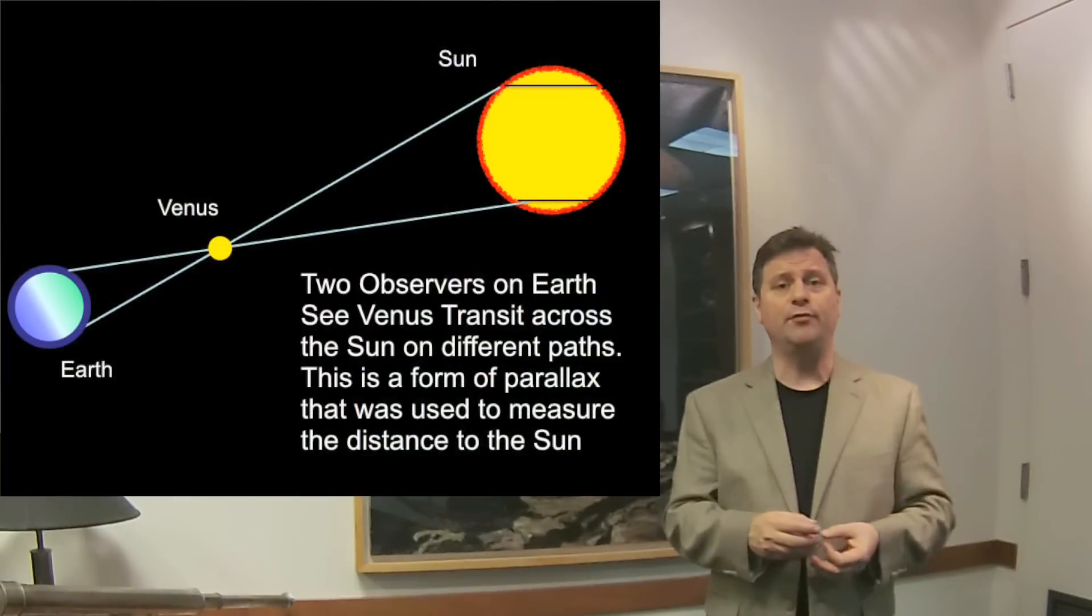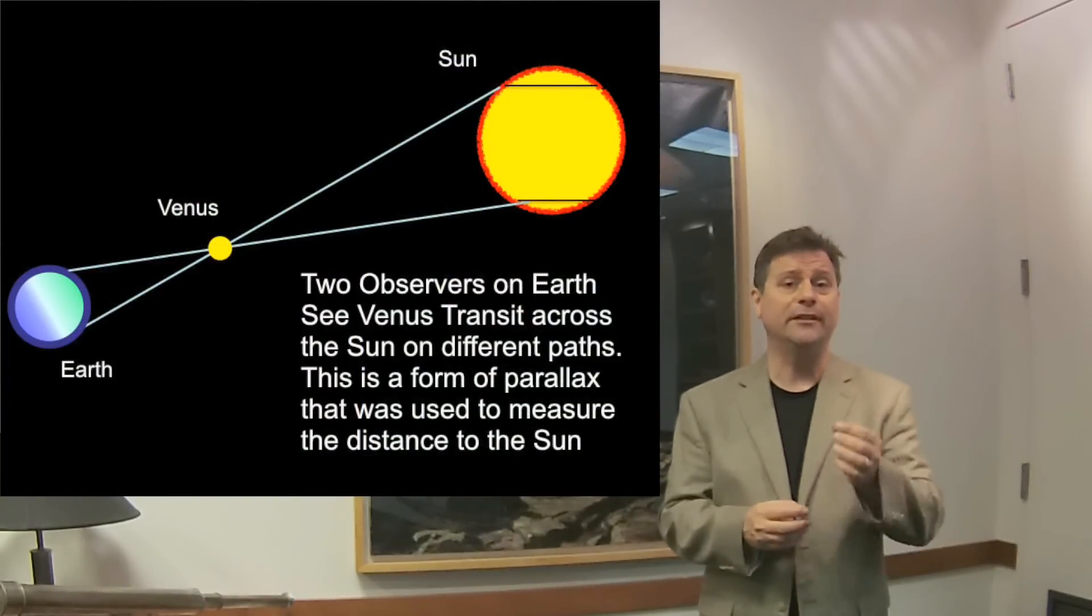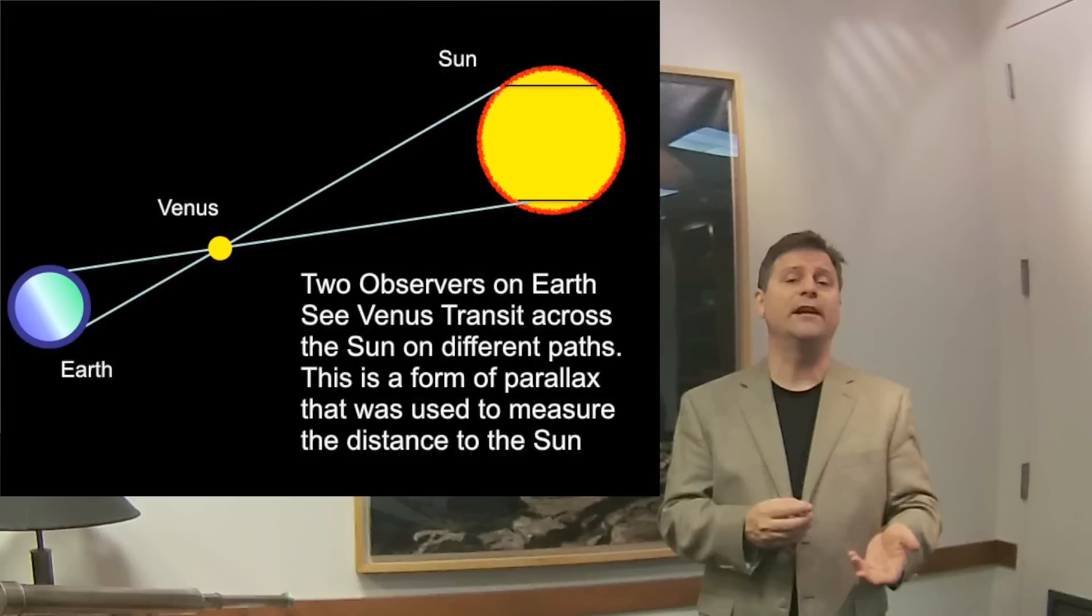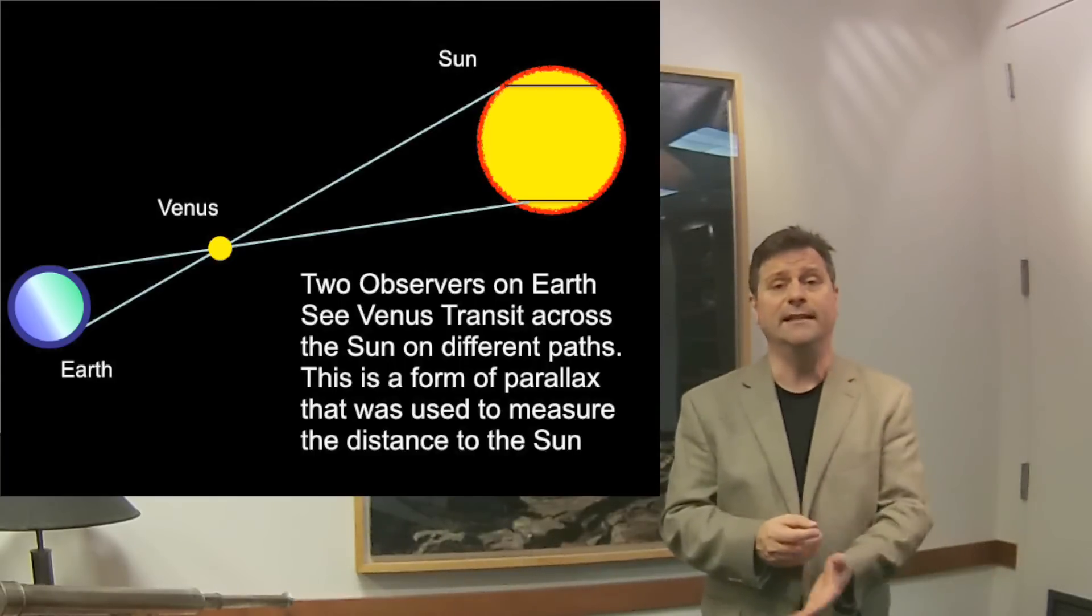...but we can also use simple geometry to make extraordinarily good guesses as to the relative distances between the earth and the sun, not the exact distances, but getting very, very close. In fact, this method would work if it were easier to do.